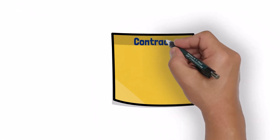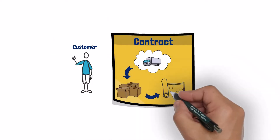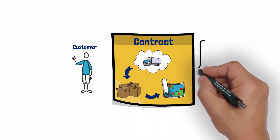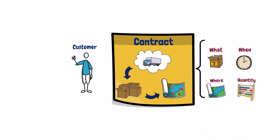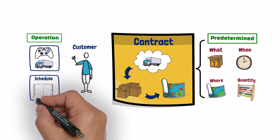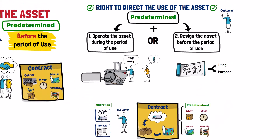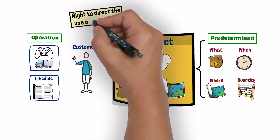Example: a one-year contract where the customer is granted the right to use a vehicle to transport its goods to several specific destinations. The contract specified what goods to be transported, when, where, and the quantity of goods to be transported. The customer will be responsible only for the operation of the vehicle and deciding about the details of each trip. Here, the decisions about directing the use of the vehicle are predetermined in the contract before the period of use starts. In addition, the customer has the right to direct the use of the asset during the period of use.